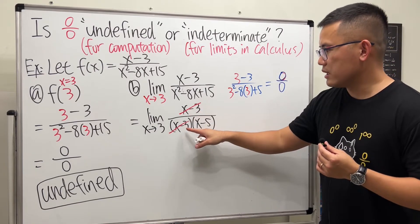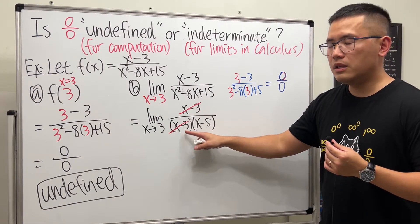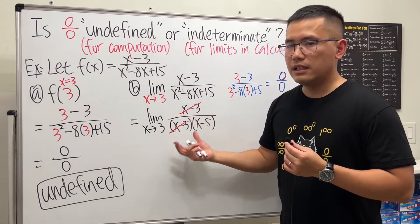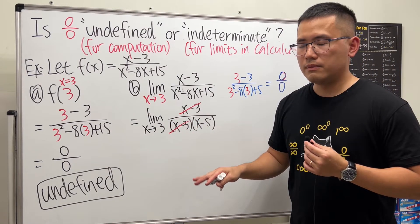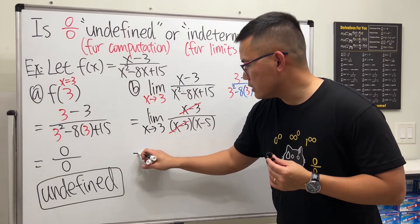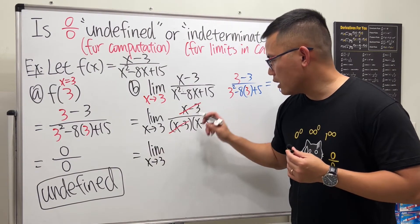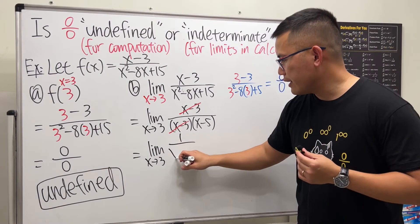And now we did cancel out the x minus 3, meaning we did cancel the 0 over 0 case. And again, this is when x is not equal to 3. So what we are going to say is this will be equal to the limit as x approaching 3 of the rest, 1 over x minus 5.